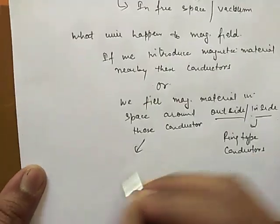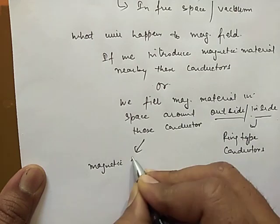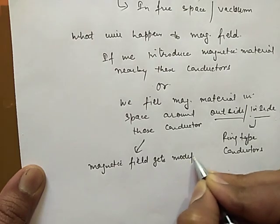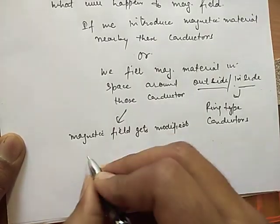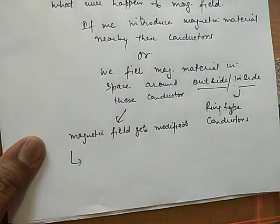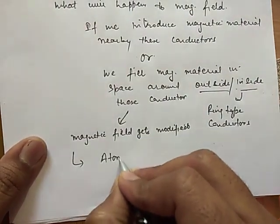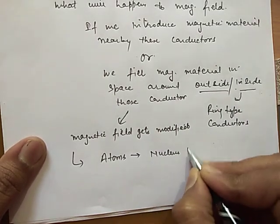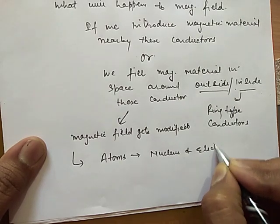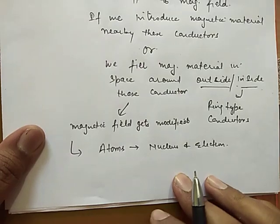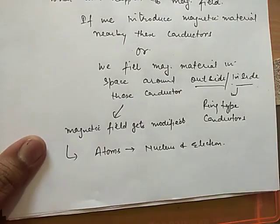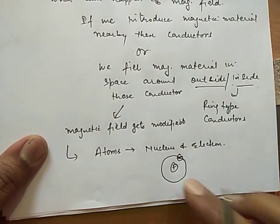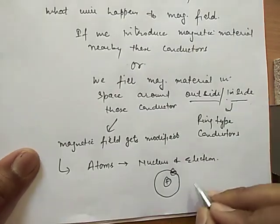Now why magnetic field gets modified? How it modified? We know that each material is made of atoms. Now atoms made of nucleus and electrons revolving around it. Now these revolving electrons constitute a current.